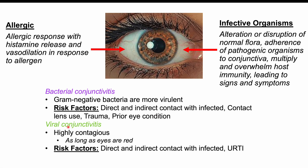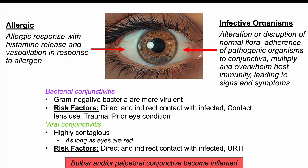Viral conjunctivitis is highly contagious — even more so than bacterial conjunctivitis — and it remains contagious as long as the eyes are red, which can be for weeks. Risk factors include direct and indirect contact with an infected individual. If a patient has an upper respiratory tract infection like a common cold, or is in contact with someone who does, this is also a risk factor, as viral conjunctivitis is associated with upper respiratory tract infections. Once the allergic response or infection occurs, the bulbar and/or palpebral conjunctiva become inflamed.